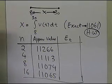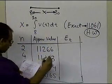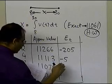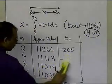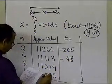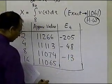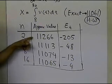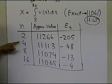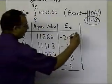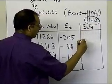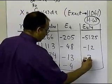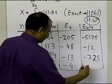The true error is the exact value minus the approximate value. This gives: minus 205 for n = 2, minus 48 for n = 4 (approximately minus 50), minus 13 for n = 8, and minus 4 for n = 16. Dividing each error by 4 gives: minus 51.25, minus 12, minus 3.75, and minus 3.25 respectively.